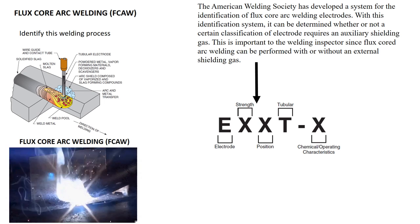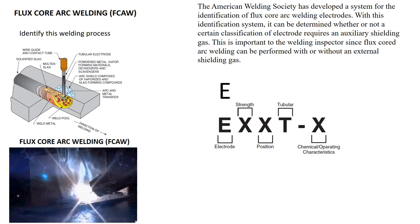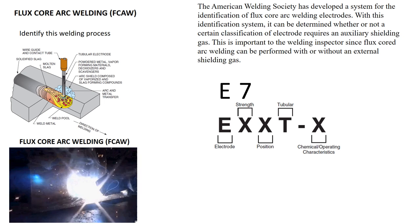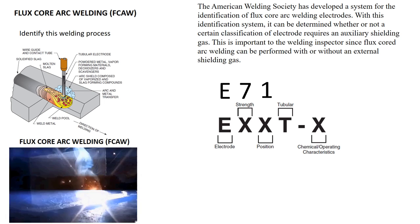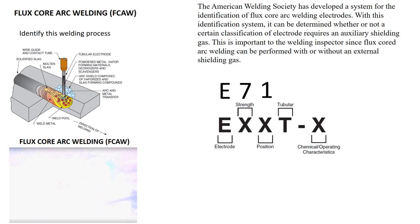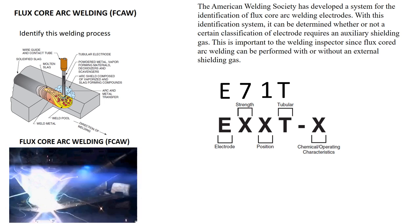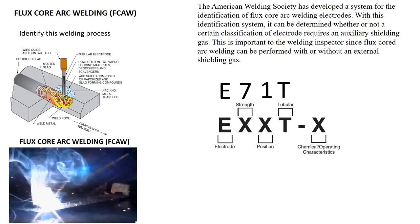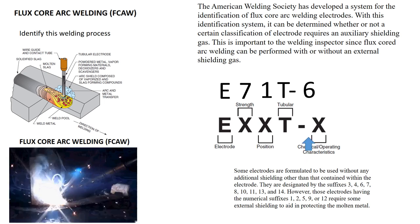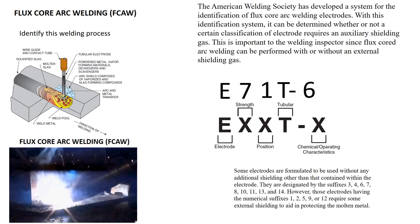To identify this type of electrode: the E stands for electrode; the 7 stands for the tensile strength, which is 70,000 pounds per square inch — that's the minimum tensile strength; the next number, which is the 1, is the welding position and lets you know you can weld in all positions; the T is tubular, which lets you know that this is a flux core wire; and the last number, which is the 6, indicates the chemical composition and operating characteristics.